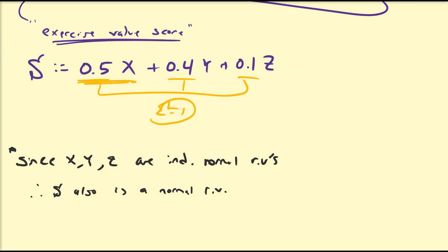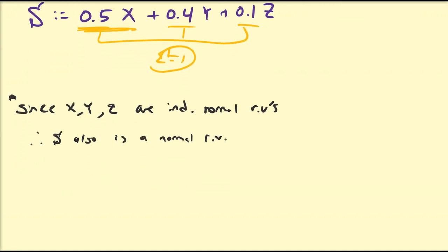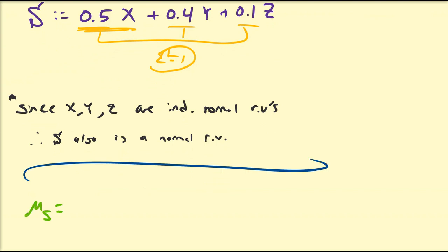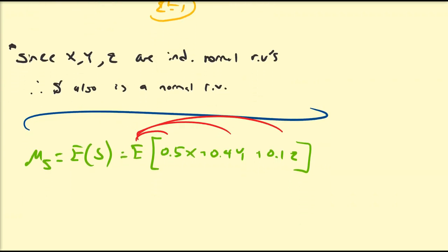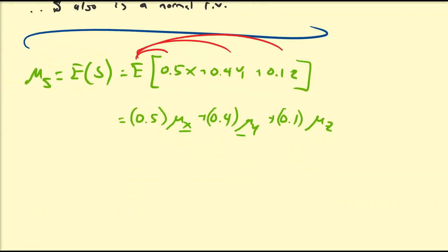In order to calculate those probabilities, we need to calculate the mean and the variance, or standard deviation, of S. Let's start with the mean of S, which is the expected value of S. The expected value of S equals the expected value of 0.5X + 0.4Y + 0.1Z. By the properties of expected values, we can distribute over the sum and factor out the constants, giving us 0.5 times mu_x plus 0.4 times mu_y plus 0.1 times mu_z. Plugging in 8.1, 42.3, and 3.1, the mean of S — the exercise value score — is 21.28.